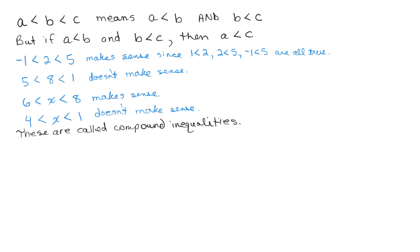First of all, we've got to make sure if we're looking at a compound inequality that it makes sense. This first one, negative 1 is less than 2 is less than 5, makes sense since it's true that negative 1 is less than 2, and 2 is less than 5, and negative 1 is less than 5 as well. But the second one, 5 is less than 8 is less than 1, does not make sense. The reason is 8 is less than 1 does not make sense, and also 5 is less than 1 does not make sense. So there is no solution to this one. If there was an X in here someplace, the answer would be no solution.